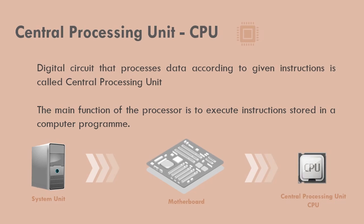The Central Processing Unit can be identified as a digital circuit that processes data according to given instructions. Whatever task is performed by the computer, in all such instances, the Central Processing Unit runs in the background. The main function of the processor is to execute instructions stored in a computer program. It gets data and processes them according to given instructions.